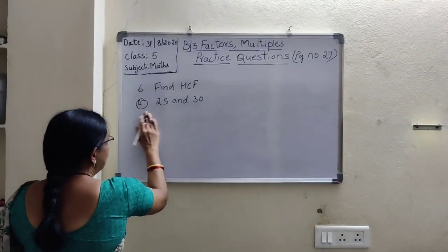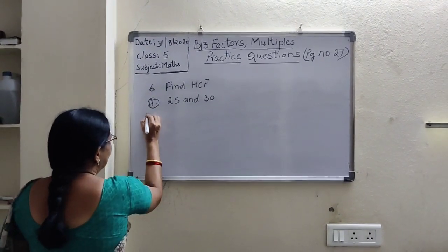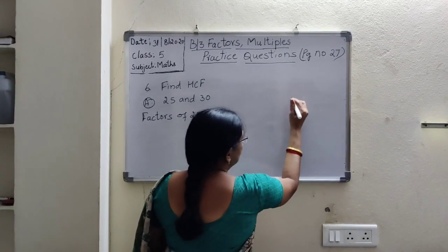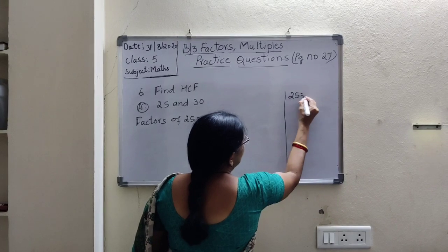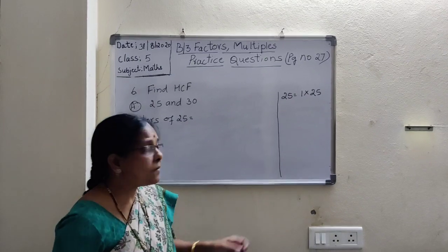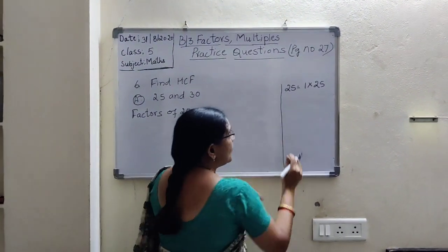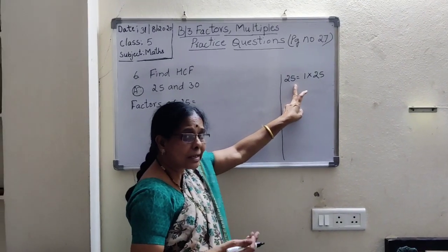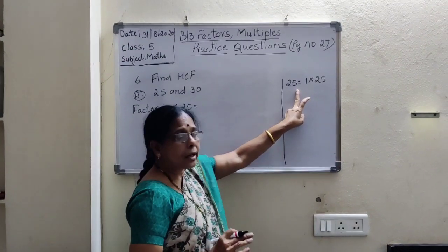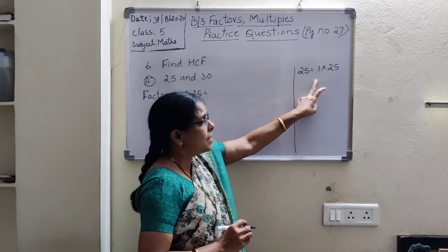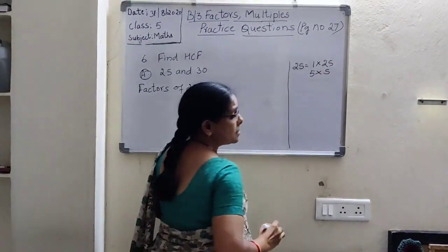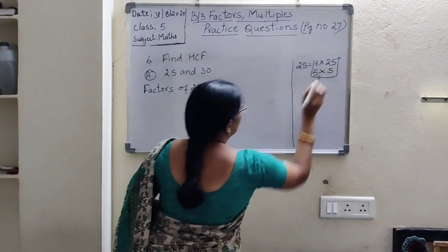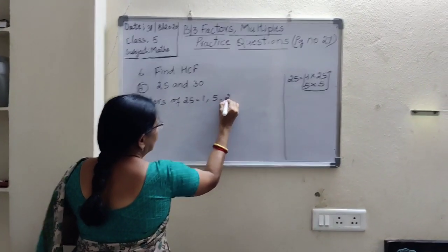First we will write the factors of 25. What are the factors of 25? 1 is a factor of all numbers. 2 is not a factor of 25. 3 is not — add 2 plus 5 equals 7, not divisible by 3. 4 is not a factor. 5 is a factor — 5 times 5 is 25. So the factors of 25 are 1, 5, 25.